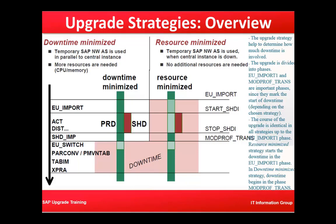In the downtime minimized strategy, a temporary SAP NetWeaver AS is used in parallel to central instance operations, requiring more processing. The shadow instance runs and is available during the uptime phase itself.